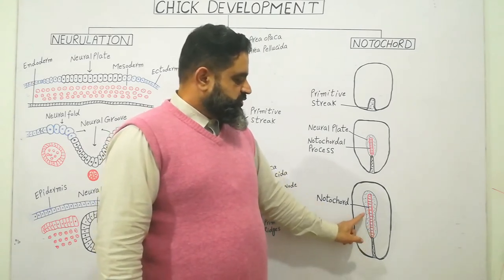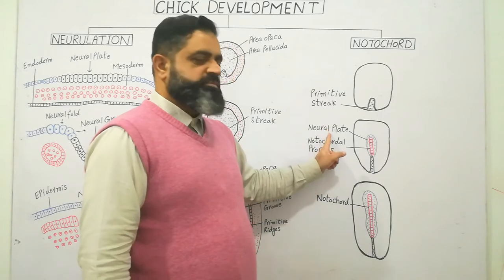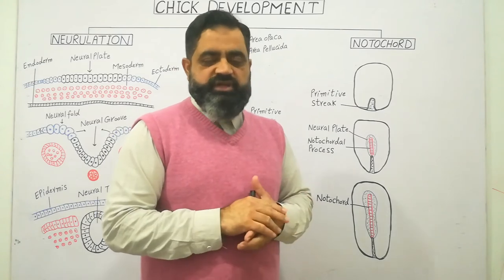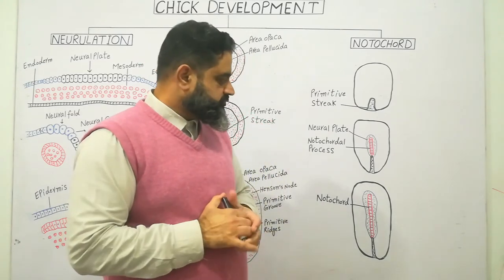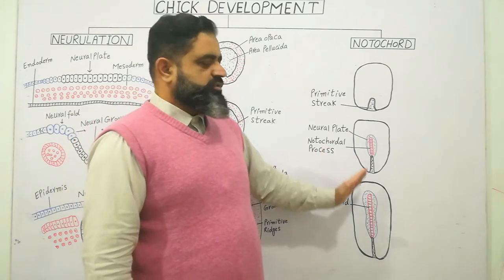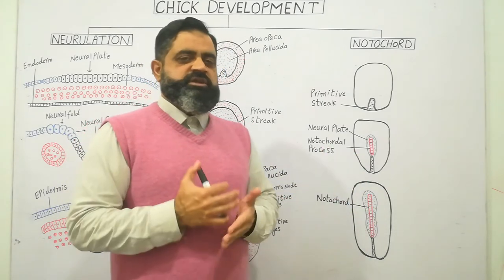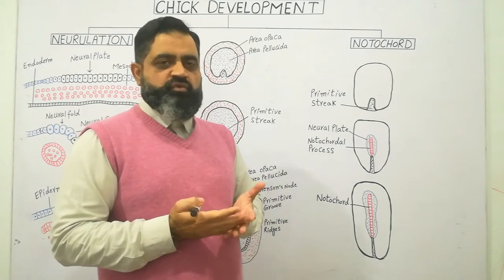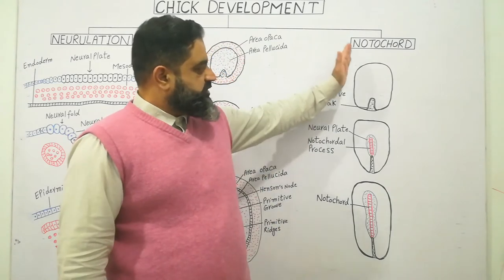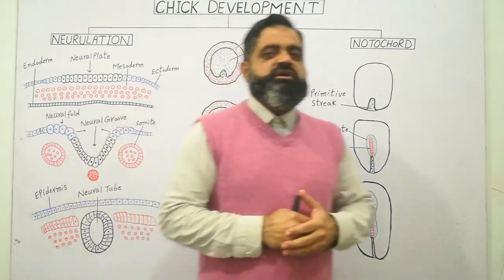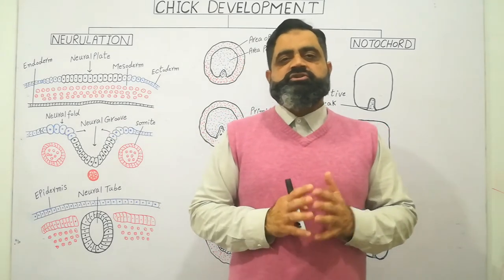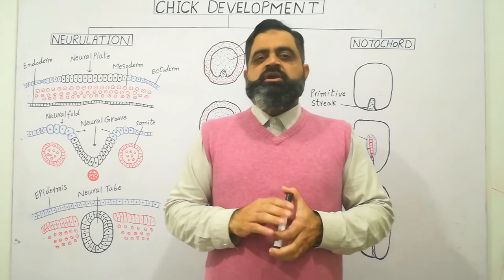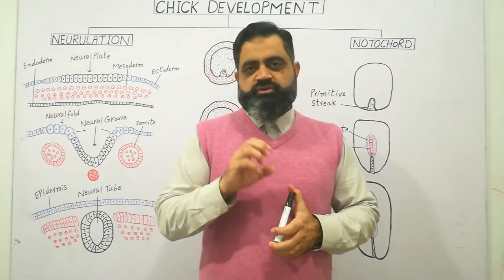Just around the notochord you can see a blue-colored area which is known as the neural plate. The neural plate is going to form the nervous system of the embryo, which we are going to discuss right now. After formation of the notochord, which takes place around 18 to 24 hours of embryo life, the next step for the embryo is formation of the nervous system. This process of forming the nervous system is known as neurulation.